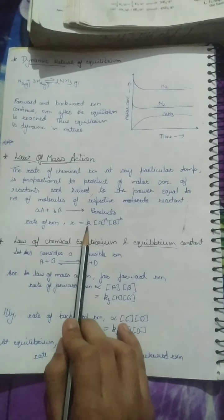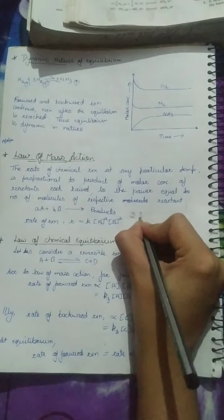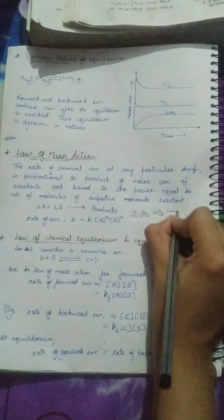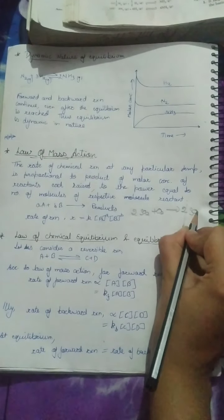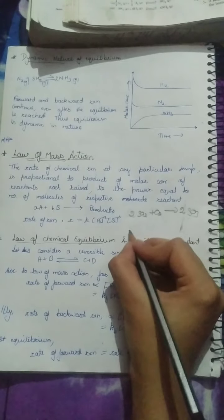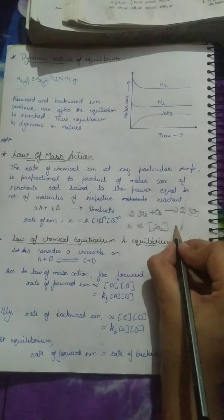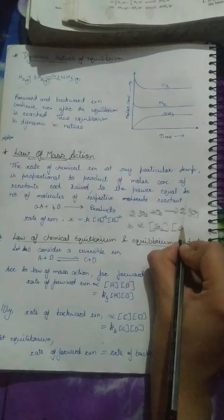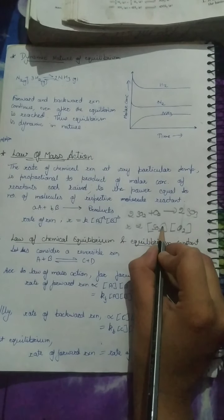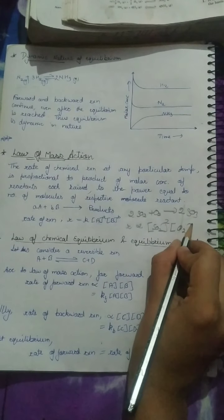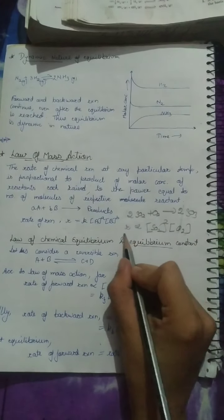For example, you have a reaction: 2SO2 plus O2 gives 2SO3. If you need to find the rate of reaction for this reaction, then R is directly proportional to the concentration of reactants, each raised to the power of their number of molecules. SO2 has 2 molecules and oxygen has 1 molecule.